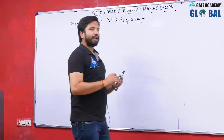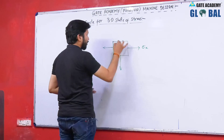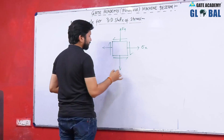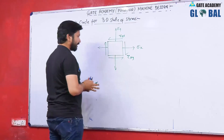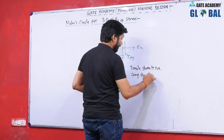We know that in any condition of state of stresses, we can draw the Mohr circle. Starting from the two-dimensional state of stress: this is sigma x, this is sigma y, this is the shear stress tau xy, and this is tau yx. The fundamental sign convention is that tensile stress will be positive and compressive stress will be negative.